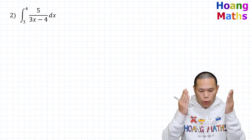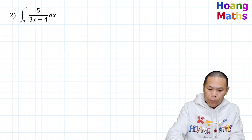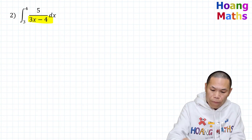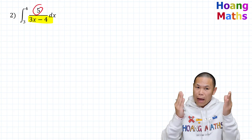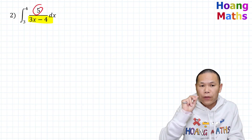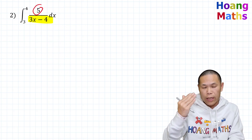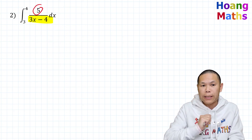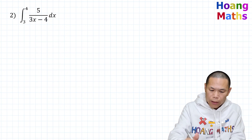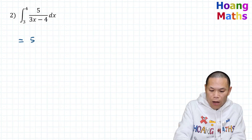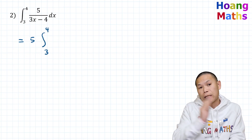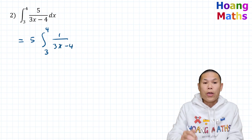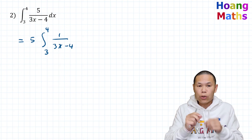Second question. If you differentiate the denominator, that gives us 3. But the numerator has 5. So somehow we need to make the numerator equal 3, so that it becomes f'(x) over f(x) and we can integrate to get ln|f(x)|. So what I do is take the 5 out first. That becomes 5 times the integral of 1 over 3x minus 4. We need to make the numerator equal 3.